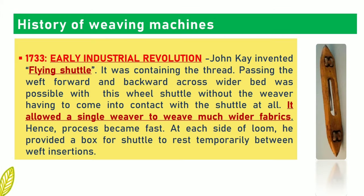In 1733, John Kay invented the flying shuttle. It contained the thread, and passing the weft was possible with this wheel shuttle without the weaver having to come into contact with the shuttle at all. It allowed a single weaver to weave much wider fabrics, and hence the process became fast. At each side of the loom, he provided a box for the shuttle to rest temporarily between weft insertions.